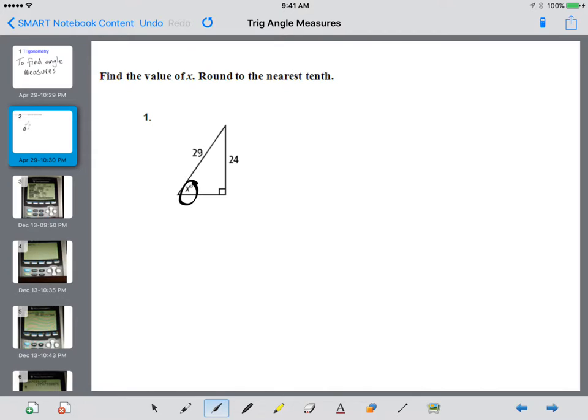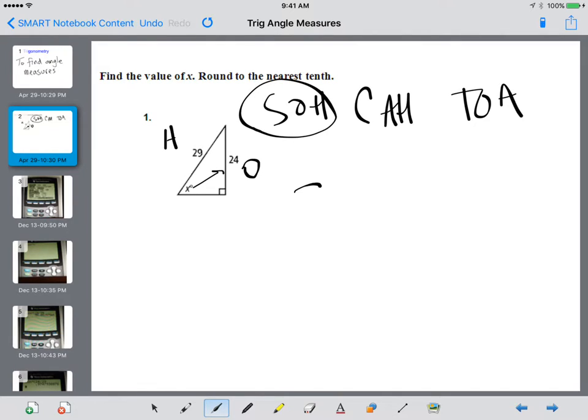Same rules apply with our SOCATOA. We're still going to use sine, cosine, tangent. Now we have what's called the missing angle that we're trying to find. We can still label our sides. I know that this side 29 is my hypotenuse, and 24 is the opposite side of our missing angle. So if I have opposite and hypotenuse, that means I'm going to be using sine. The sine of the angle in degrees is equal to the opposite over hypotenuse, which would be 24 over 29.